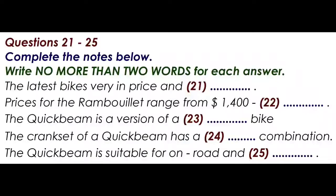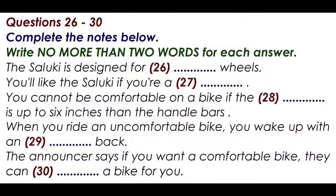Before you hear the rest of the talk, you have some time to look at questions 26 to 30. The Saluki is our roadish, light-touring, randonnearing frame. It's designed for 650B wheels. If 650B means anything to you, you'll either love it or think it's marketing suicide. If you're new to 650B and a follower, you won't want it. If you're new and a rebel, you will.